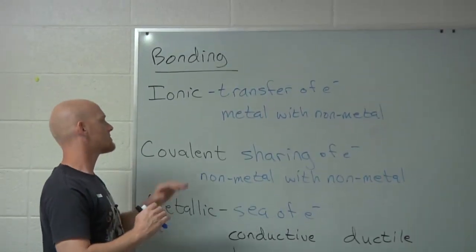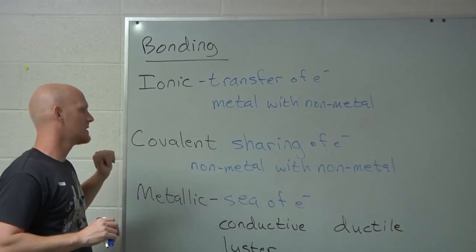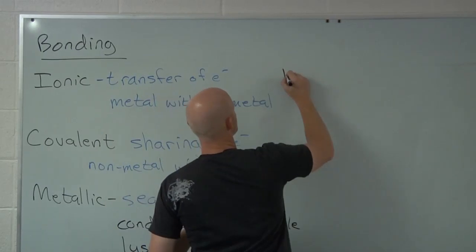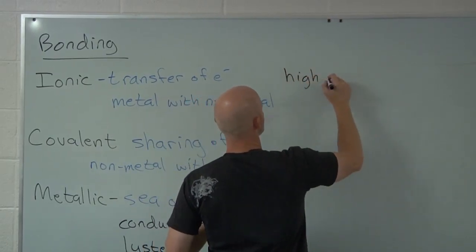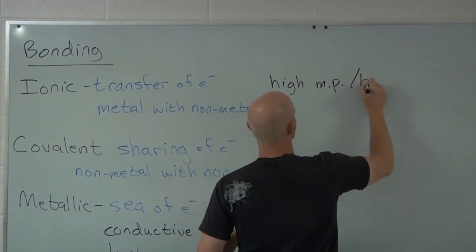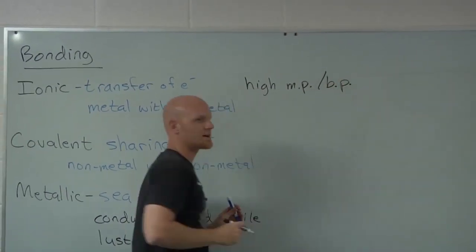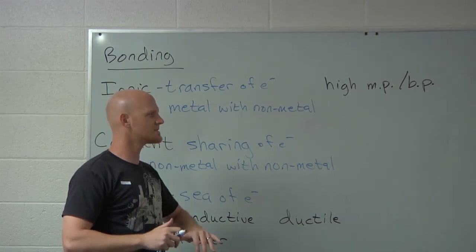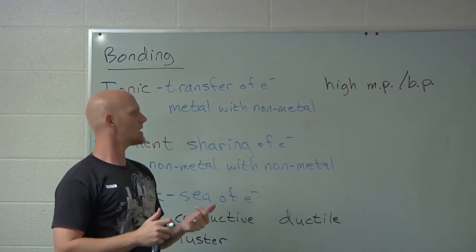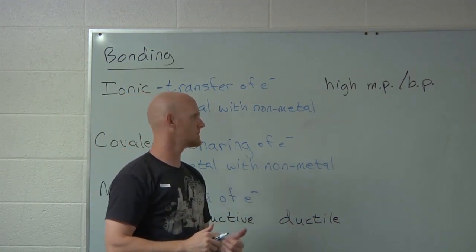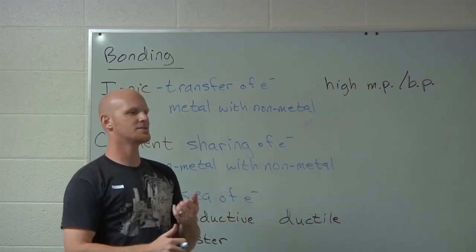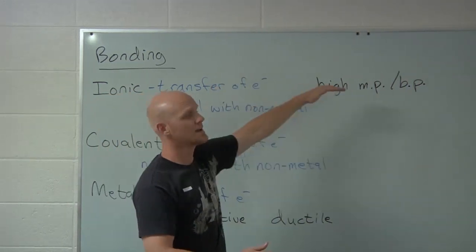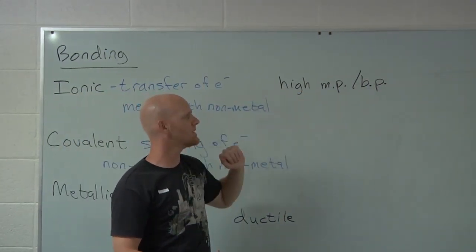If we look at the properties of ionic and covalent compounds — ionic compounds usually have fairly high melting points and boiling points. If you ever tried to melt salt, not dissolve it in water but just straight up melt it — good luck. If you put pure salt in a pot on your stove, your stove doesn't get hot enough to melt it. It has super high melting points. Salt is an ionic compound, and ionic compounds generally have high melting points and boiling points.